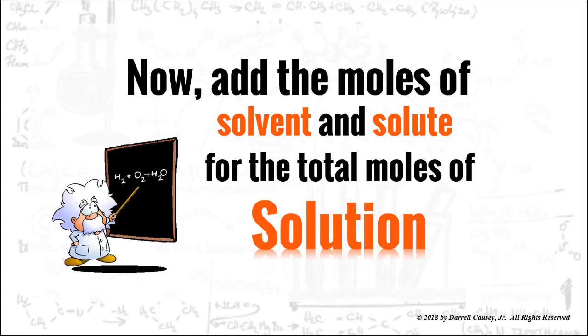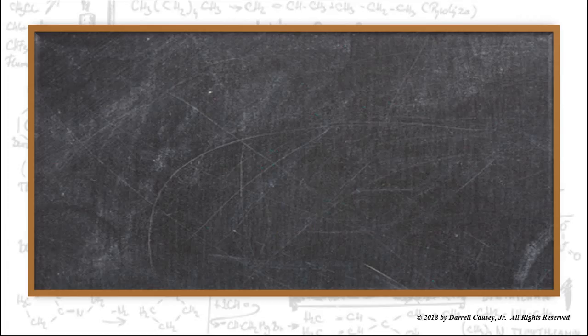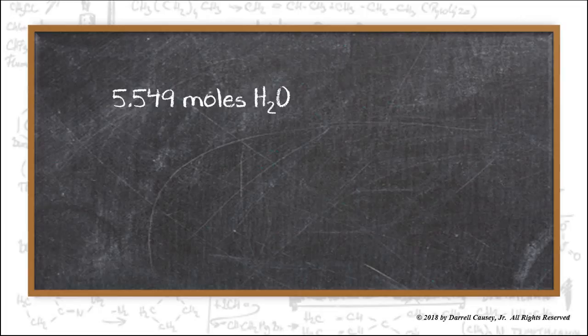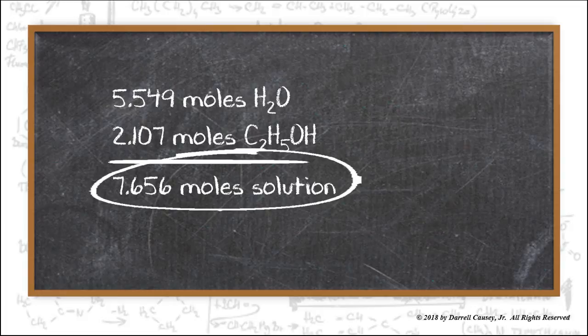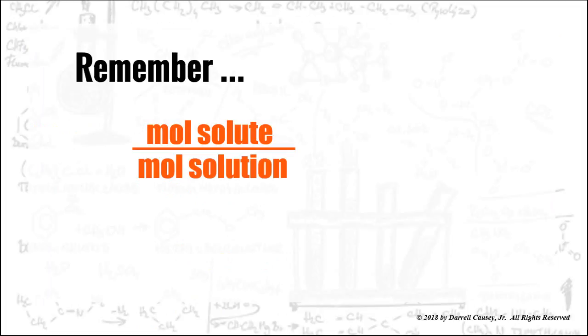Now we have the moles of each of these. Add the moles of solvent and solute for the total moles of solution. So 5.549 moles of water plus 2.107 moles of ethanol and that'll give us 7.656 moles of solution. Now we have the moles of solvent, the moles of solute, and the moles of solution. We're ready to calculate mole fractions.